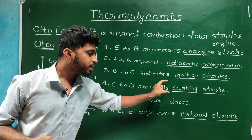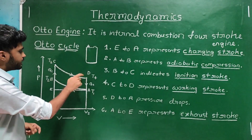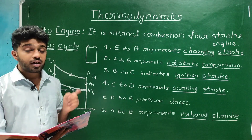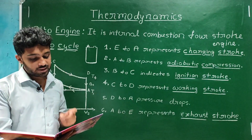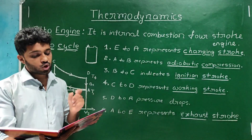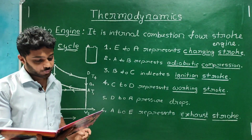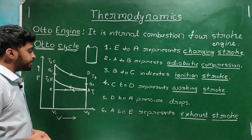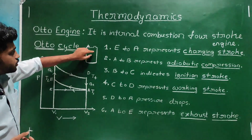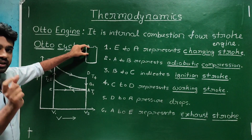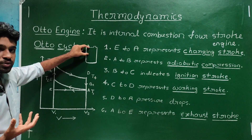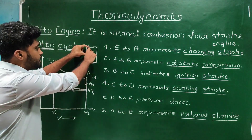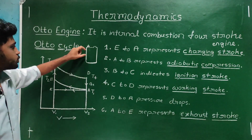C to D represents the working stroke. The gas expands adiabatically and the engine does work. The volume changes from V1 to V2 and the pressure decreases.